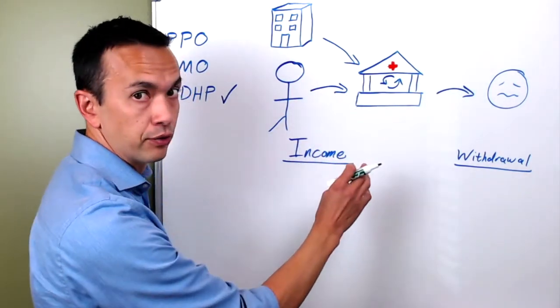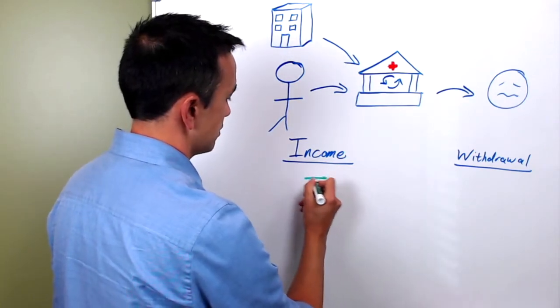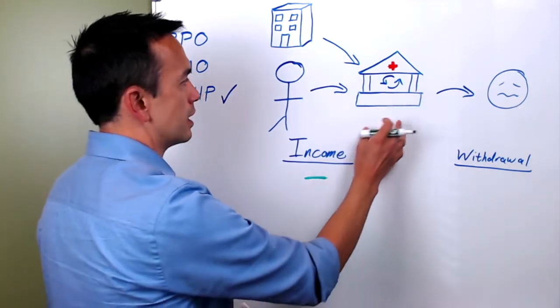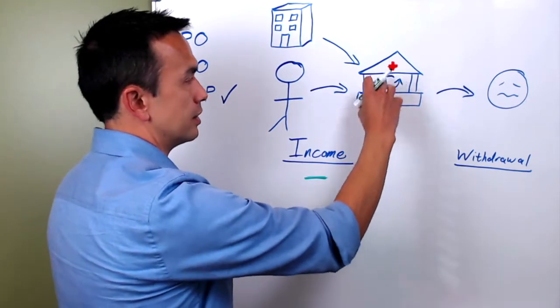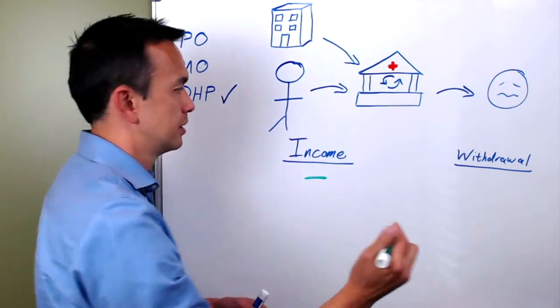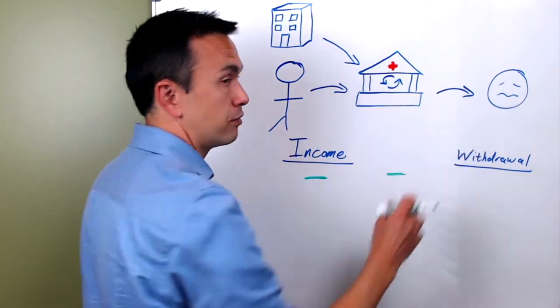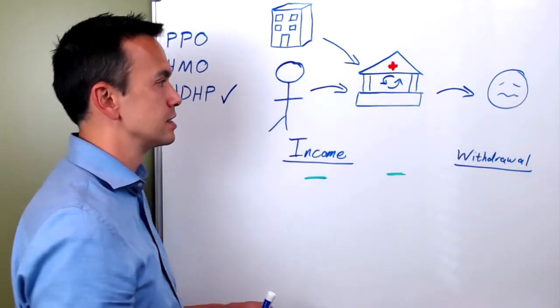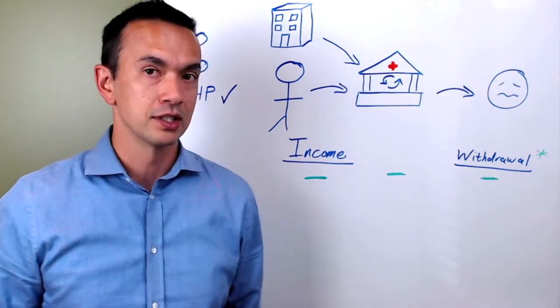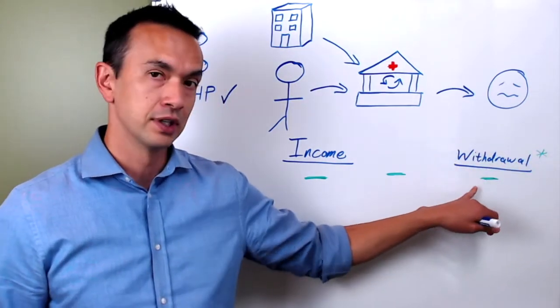This money, whenever you put it into the HSA, it doesn't count as income, so it's not taxed here. While it's in the account, and I'll get more into this later, you can actually have this invested and the dividends and gains and everything while it's in the account isn't taxed. So that's also saying it's tax deferred while it's in the account. And then finally, if you withdraw it for qualified medical expenses, then it's also not taxed whenever you take it out. So I put an asterisk there because it's very important that it actually is a qualified medical expense in order for it not to be taxed.